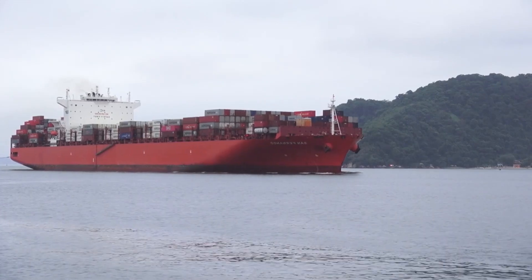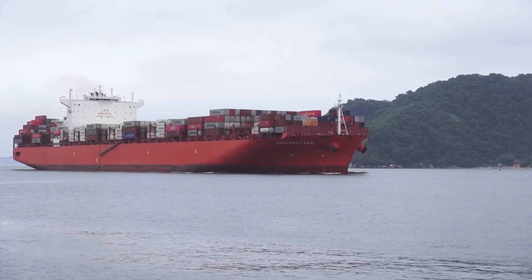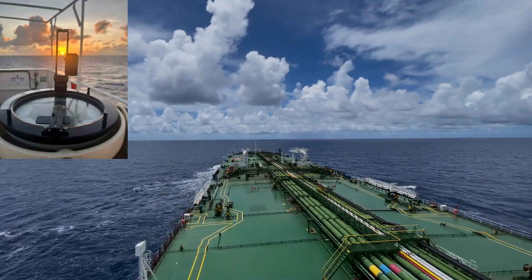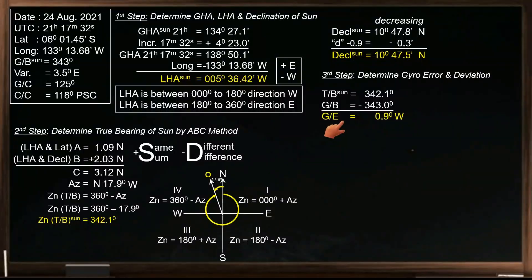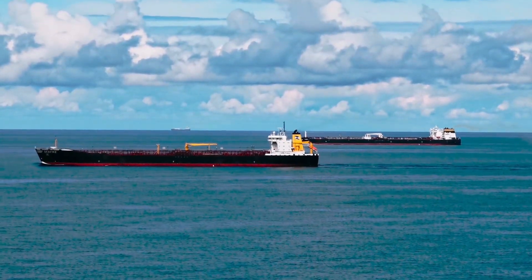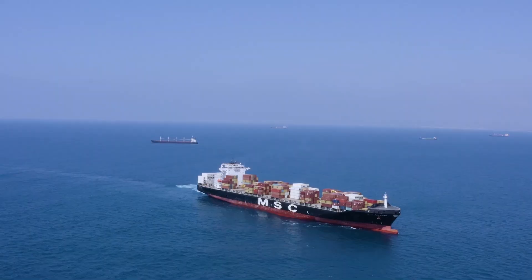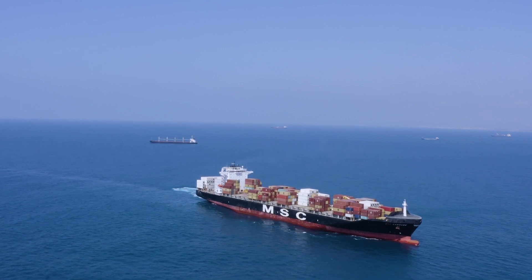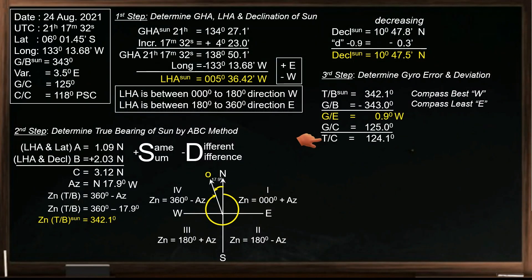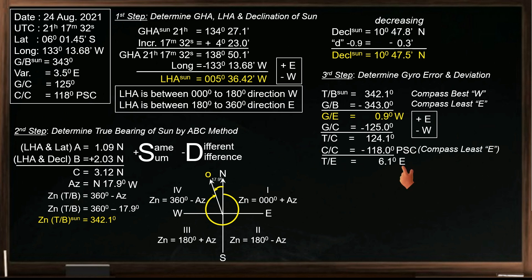Determining a ship's gyro error while underway is crucial for ensuring accurate navigation and maintaining safe operations. Although the gyro compass on board may have only a minor error, even small inaccuracies in the heading can accumulate over time, leading to significant deviations from the planned route. In today's video, I'll show you how to determine the gyro error by astronomical observation using the ABC method.